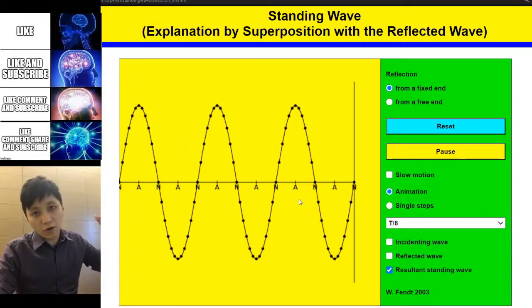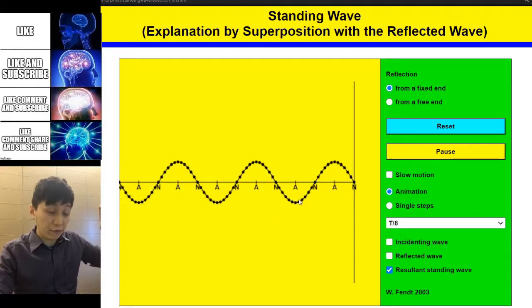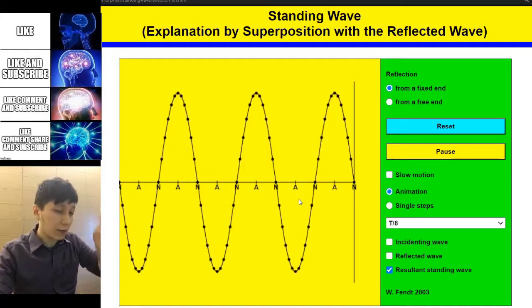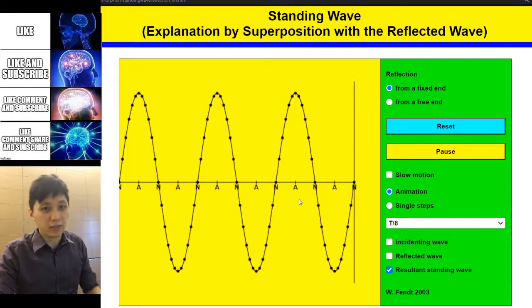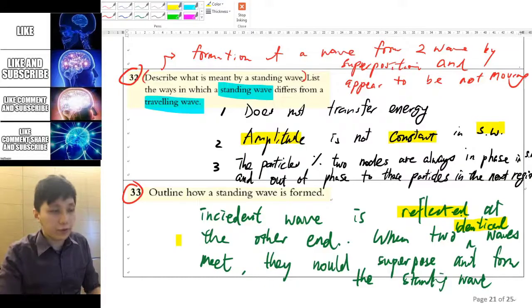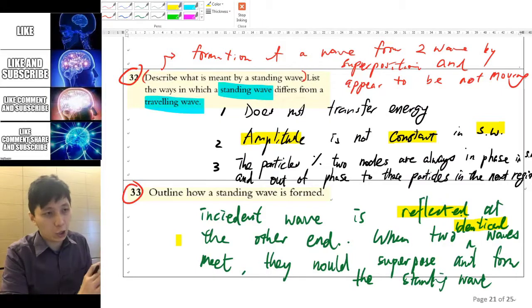While for traveling wave they all will have the same amplitude, because the wave is literally traveling, so for all the particles sooner or later they will hit the crest and the trough for the same displacement. The third difference, this one is pretty hard to observe.